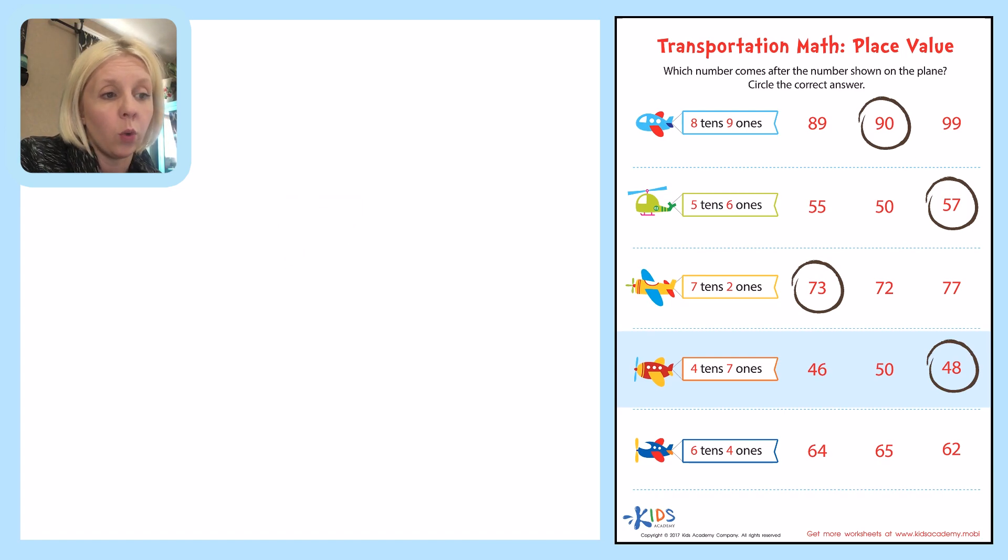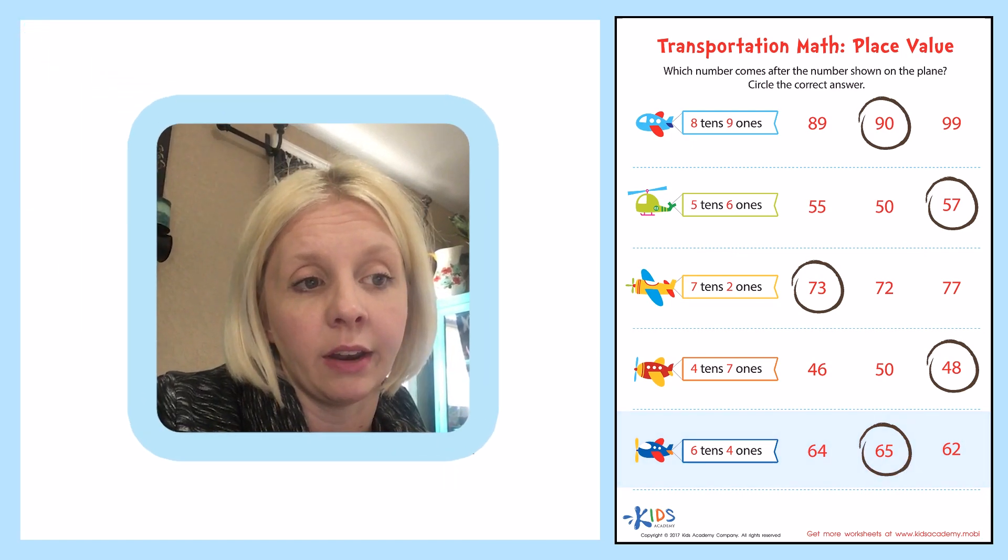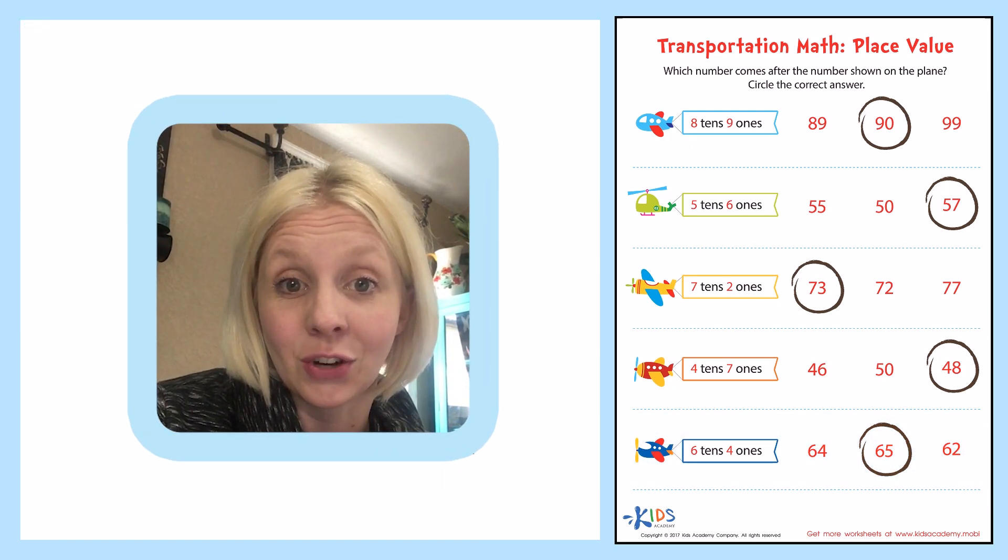Great job. And we've got one more. The last one says 6 tens and 4 ones. So we're going to look right here. What comes after 4? 5. Our 6 stays the same. So it's 64, 65. Great job!